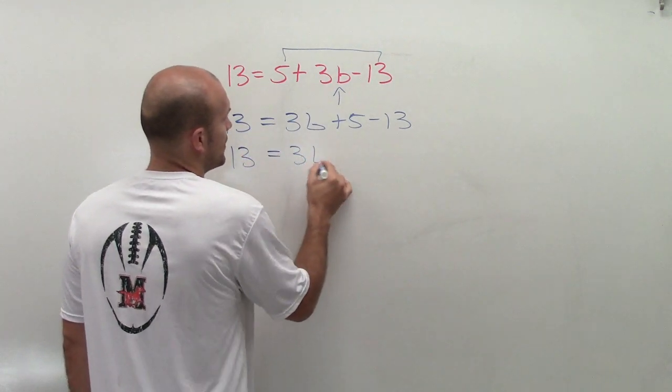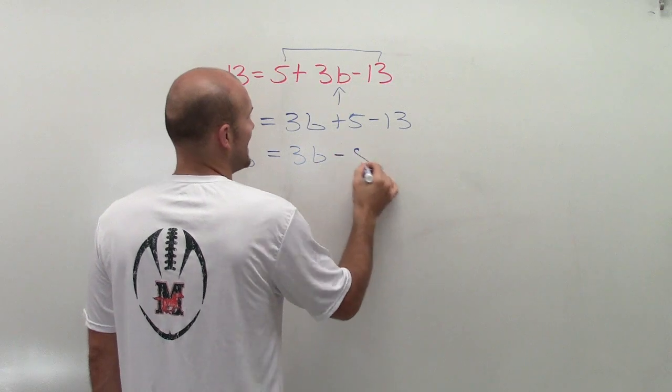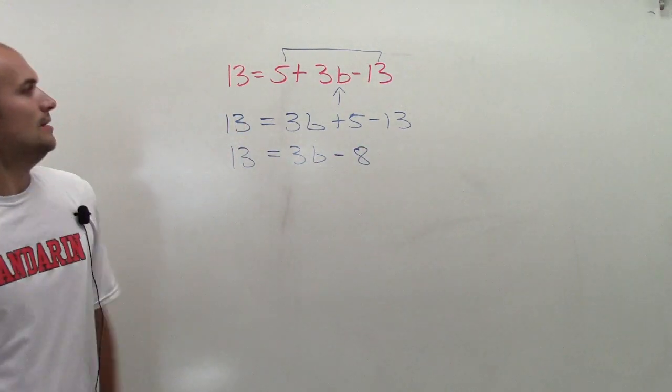So you could say 13 equals 3b. I'm sorry, not subtract 7. That's minus 8. So then, now it's a two-step equation.